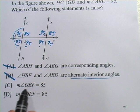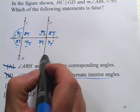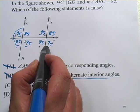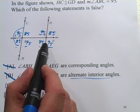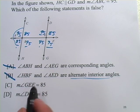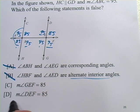C says the measure of GEF equals 85. So GEF, GEF, so this angle right here, aha, well, this one is 95, not 85. So I think we found our answer, but let's just double check with D.